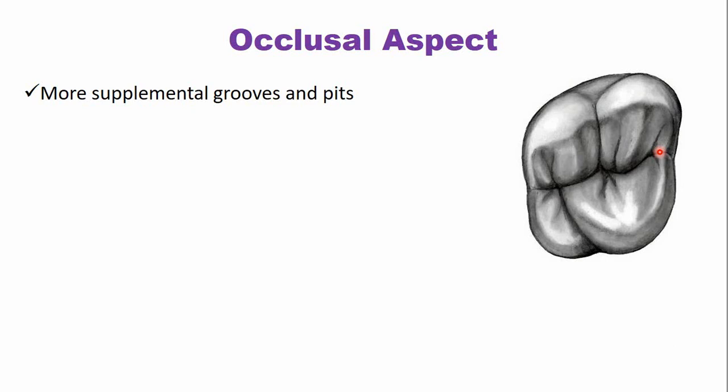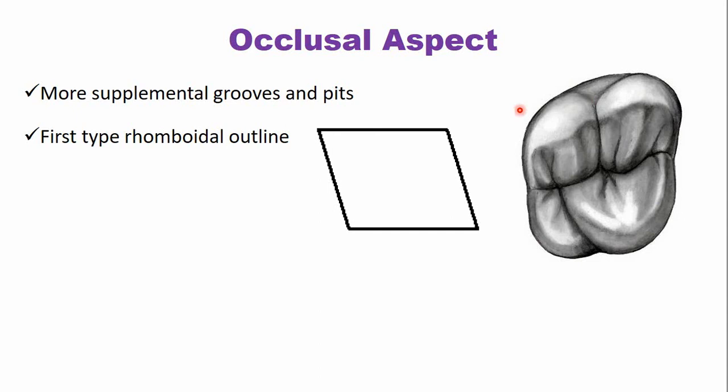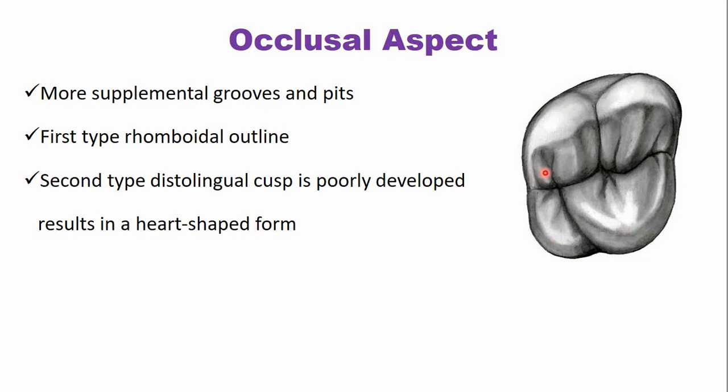The occlusal outline of the maxillary second molar can be one of two types. The first type has a rhomboidal outline. In the second type, the distolingual cusp is either poorly developed or entirely missing, giving the crown a heart-shaped outline. So two occlusal outline types can be found: rhomboidal and heart-shaped.